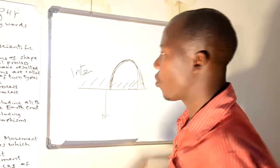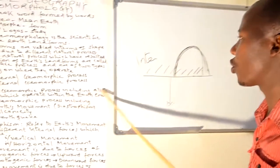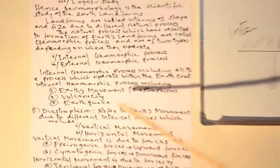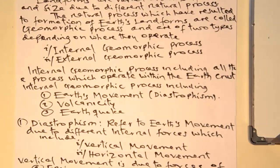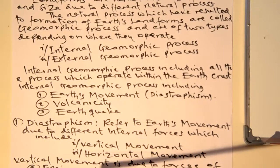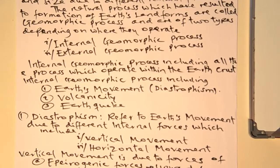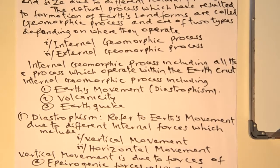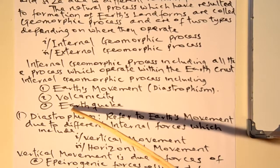We will describe more in this topic. Dear students, the internal geomorphic process includes all processes which operate within the earth's crust, and it consists of the following subtopics: earth movement, or diastrophism. Not only that, but also there is volcanism and earthquakes.